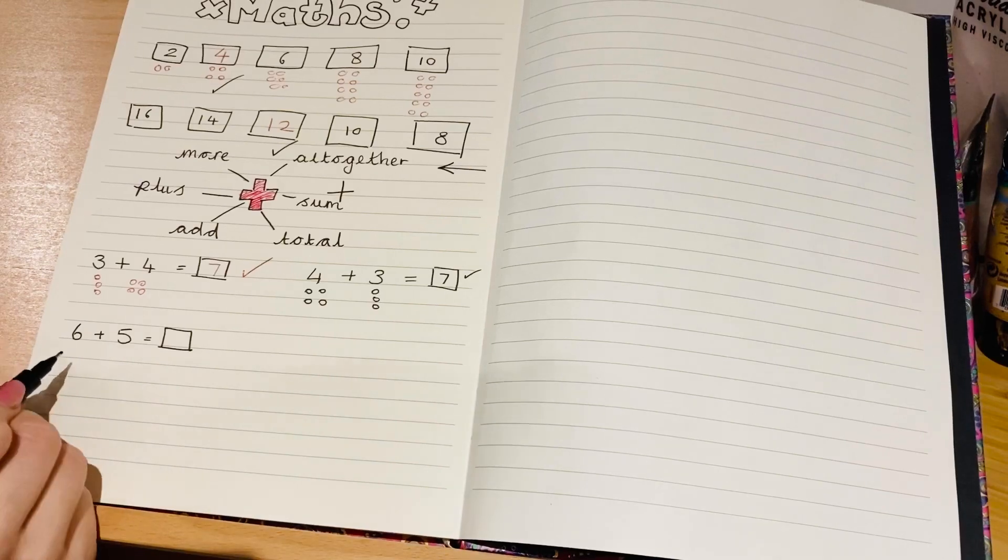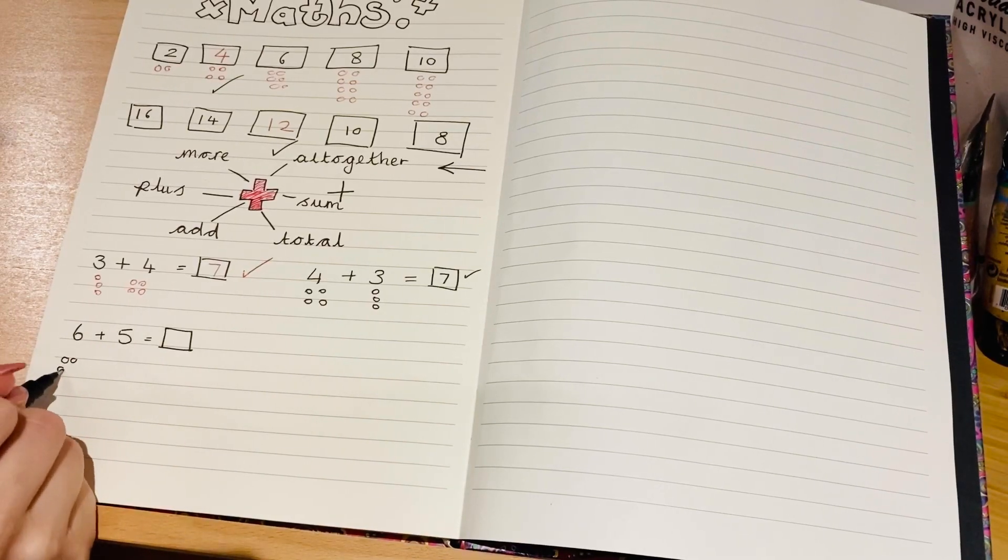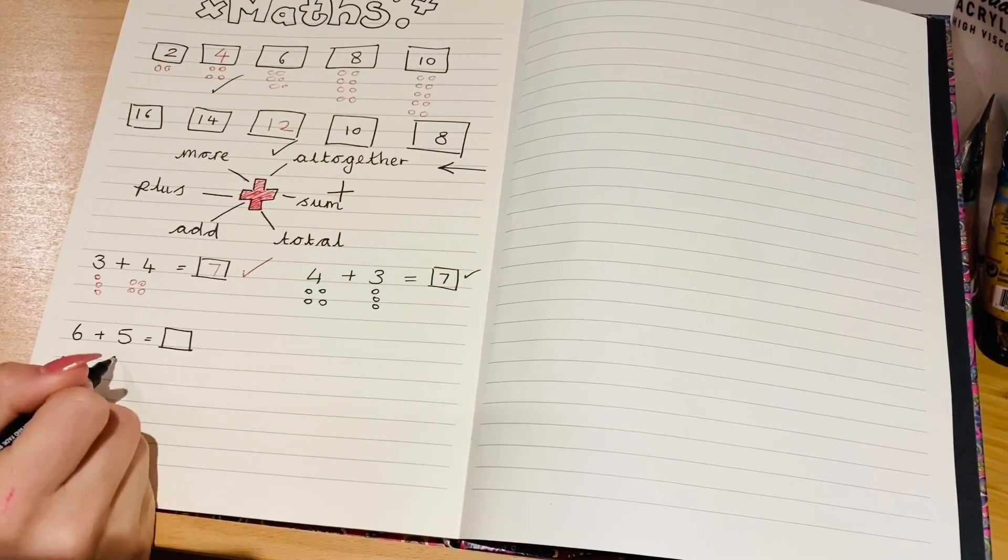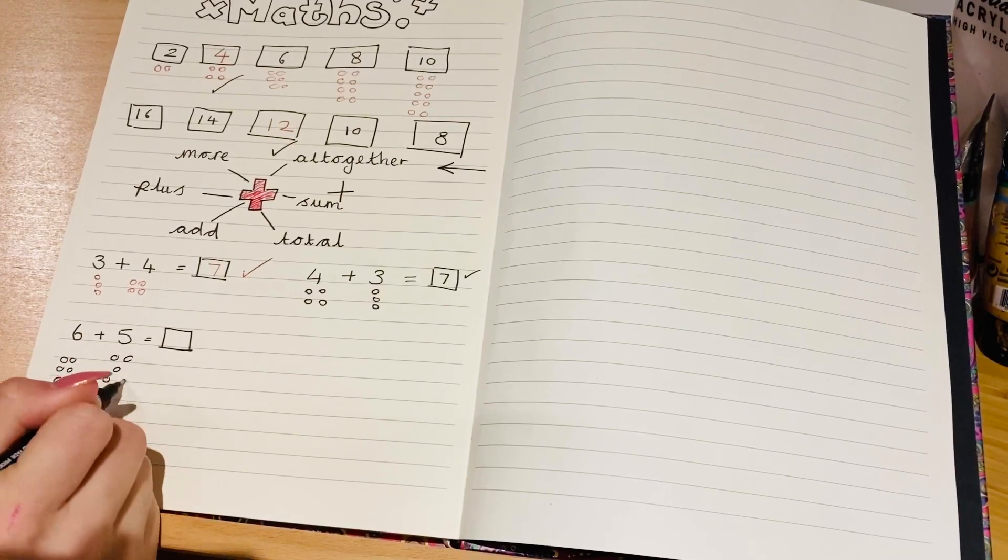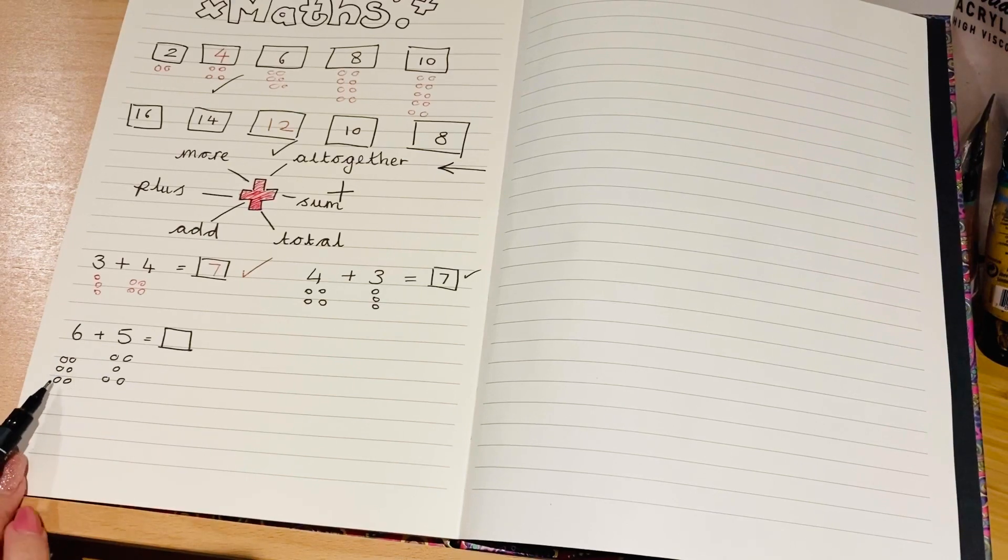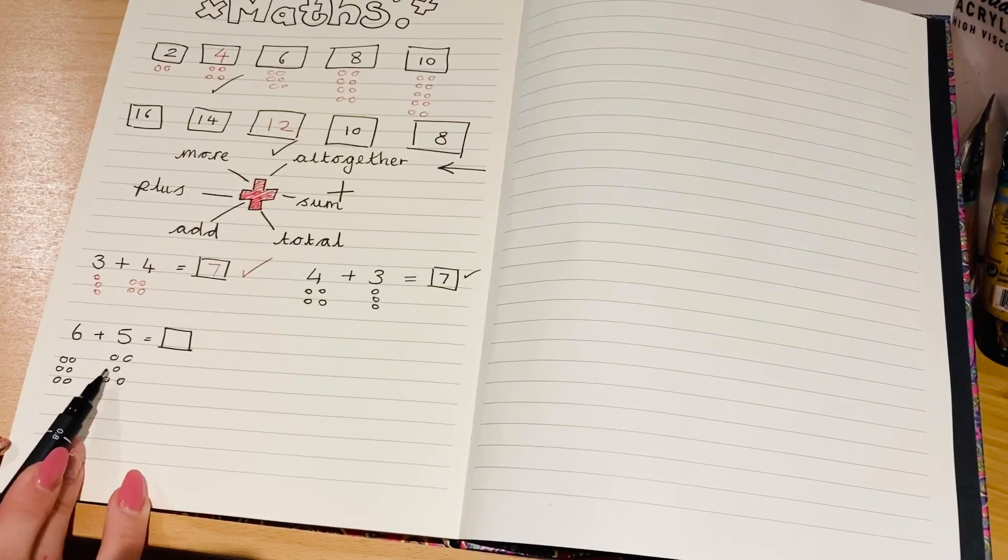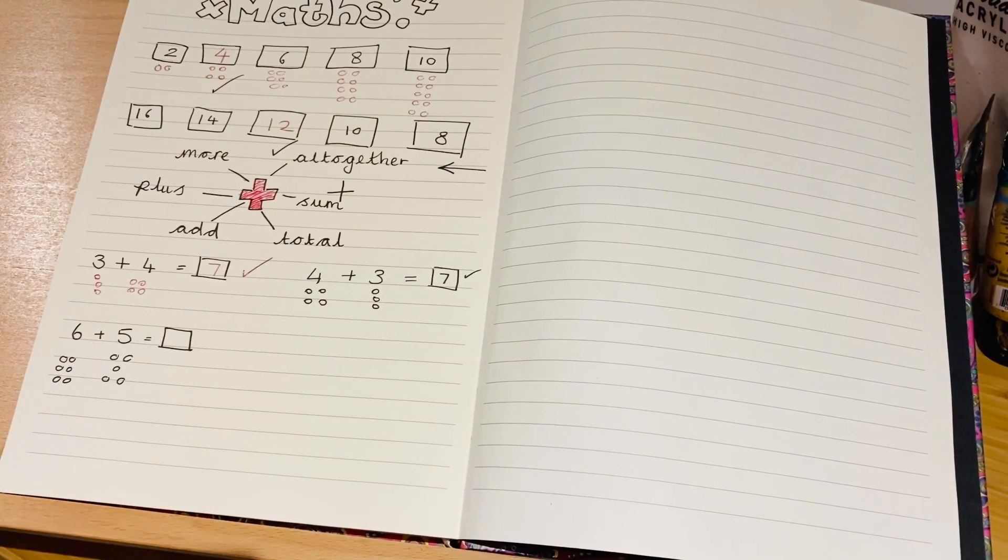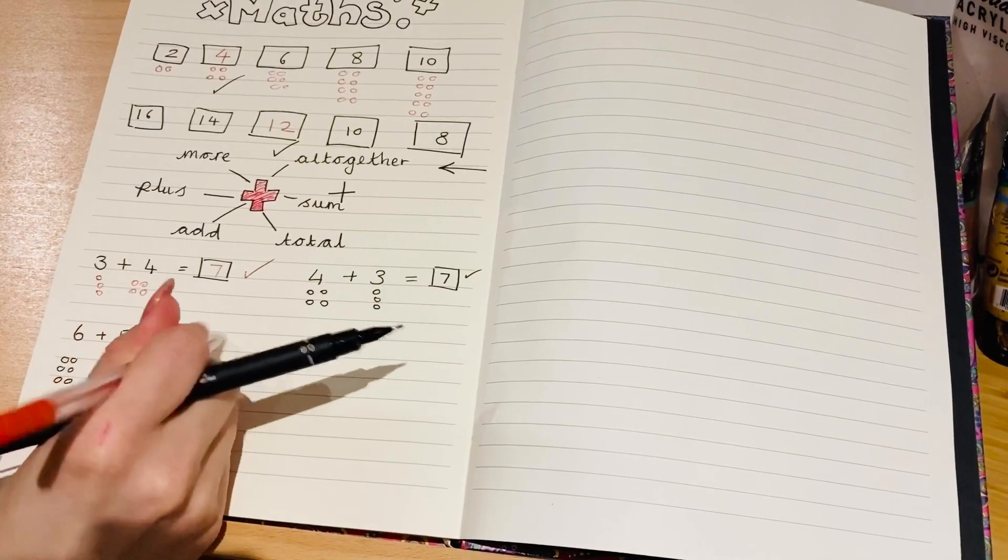So if you're doing the drawing the circles method, you can draw six circles. One, two, three, four, five, six, and five here. One, two, three, four, five, six plus five. Let's count them together. One, two, three, four, five, six, seven, eight, nine, ten, eleven. If you put eleven, give yourself a tick. Well done.